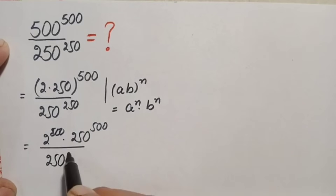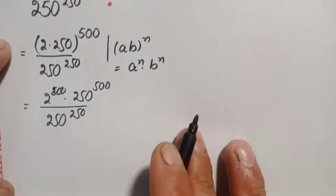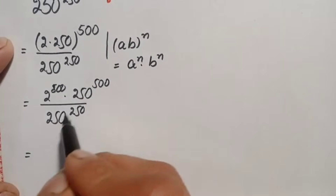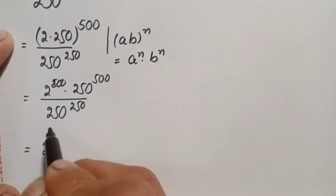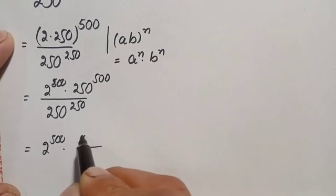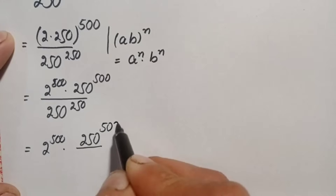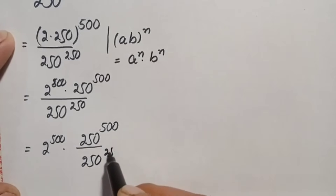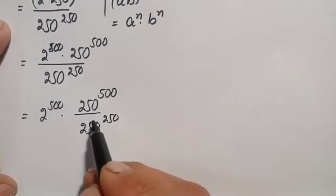Divided by 250 raised to power 250. Next we can write this number by separating the division of these two numbers, so this will become 2 raised to power 500 times 250 raised to power 500 divided by 250 raised to power 250.